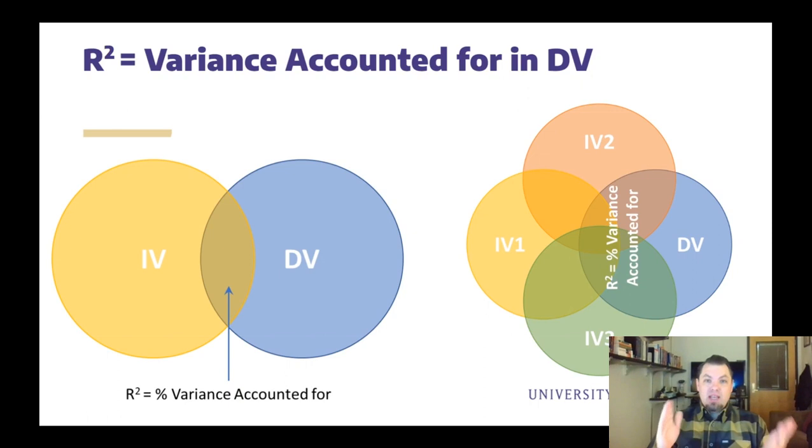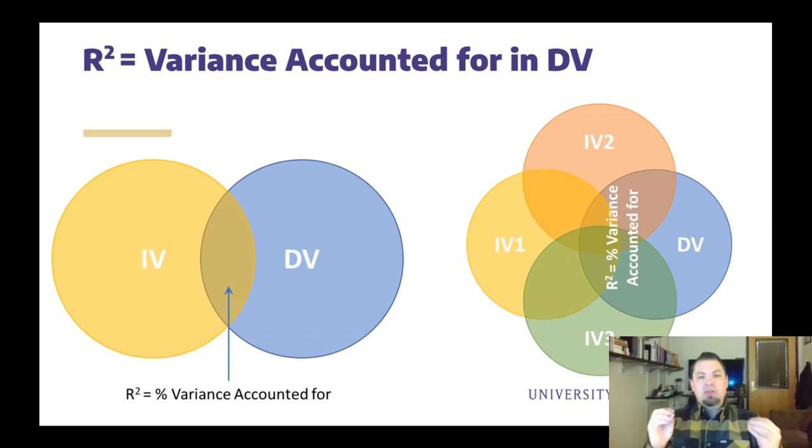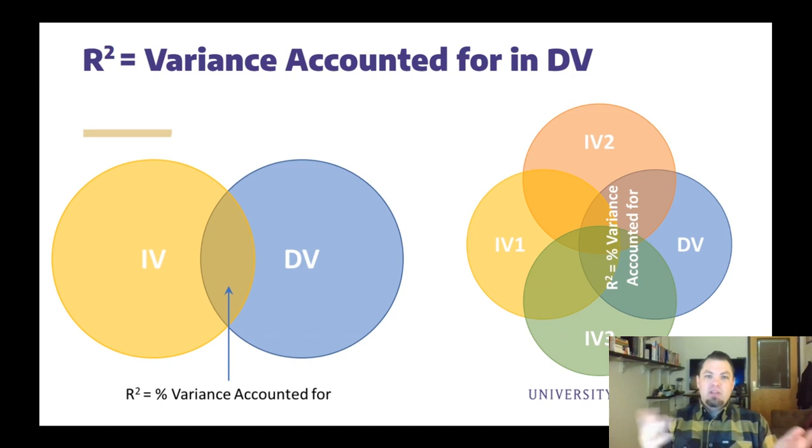Linear regression also allows us to estimate the relationship strength between the dependent and independent variables. All statistical software provides a coefficient of determination, which is notated as r squared. r squared measures the proportion of the variance in the dependent variable that is explained by the independent variables. A value of 1 indicates that all of the variance in the dependent variable is explained by the independent variables, while a value of 0 indicates that none of the variance is explained.